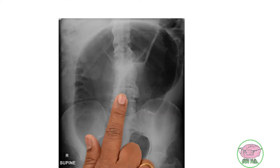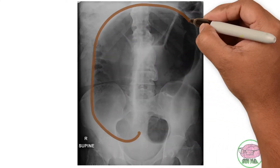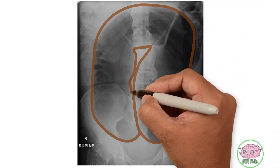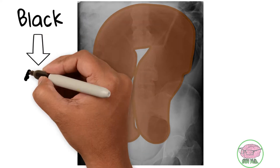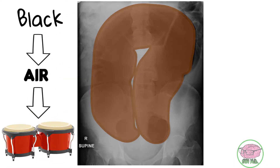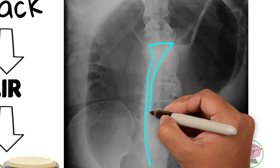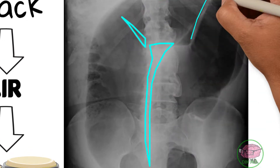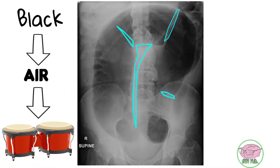Now let's look at the abdominal x-ray. We can see a strange inverted U shape that is black, meaning it has air, which may explain the tympanic percussion on physical examination. We can also see white structures located in different parts of this inverted U.